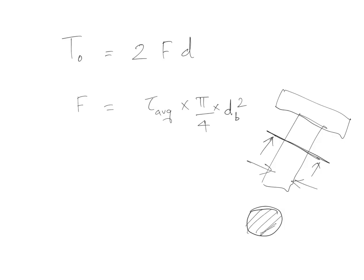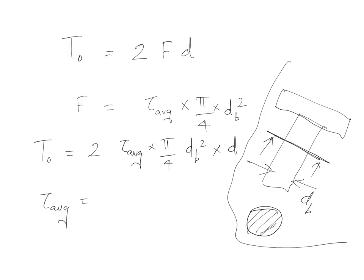Plugging it into this expression, T₀ = τ_avg × π/4 × (diameter of the bolt)² × the PCD. Then τ_avg = T₀ × 2 / (π × (diameter of the bolt)² × d).